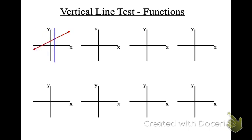You can see it never crosses the line at two times in the same moment, so it's a function. Running my vertical line through the next graph — it does not go through the red line at two times in the same moment, so this too is a function.